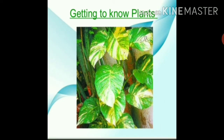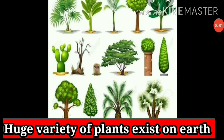Do you know that there are different types of plants all around us? They grow on land as well as in water. There are about two lakh fifty thousand types of plants. Based on the size and kind of stem, plants can be divided into herbs, shrubs, trees, creepers, and climbers.